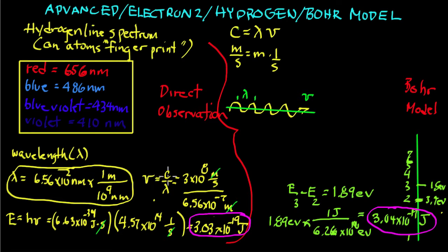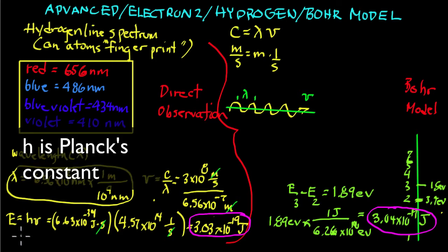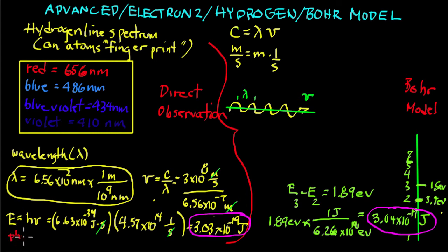And use the equation for frequency equals speed of light over wavelength, and I got a frequency. Then I use Einstein's equation, E equals h nu, which is the equation that defines the energy of a line of light called a photon.